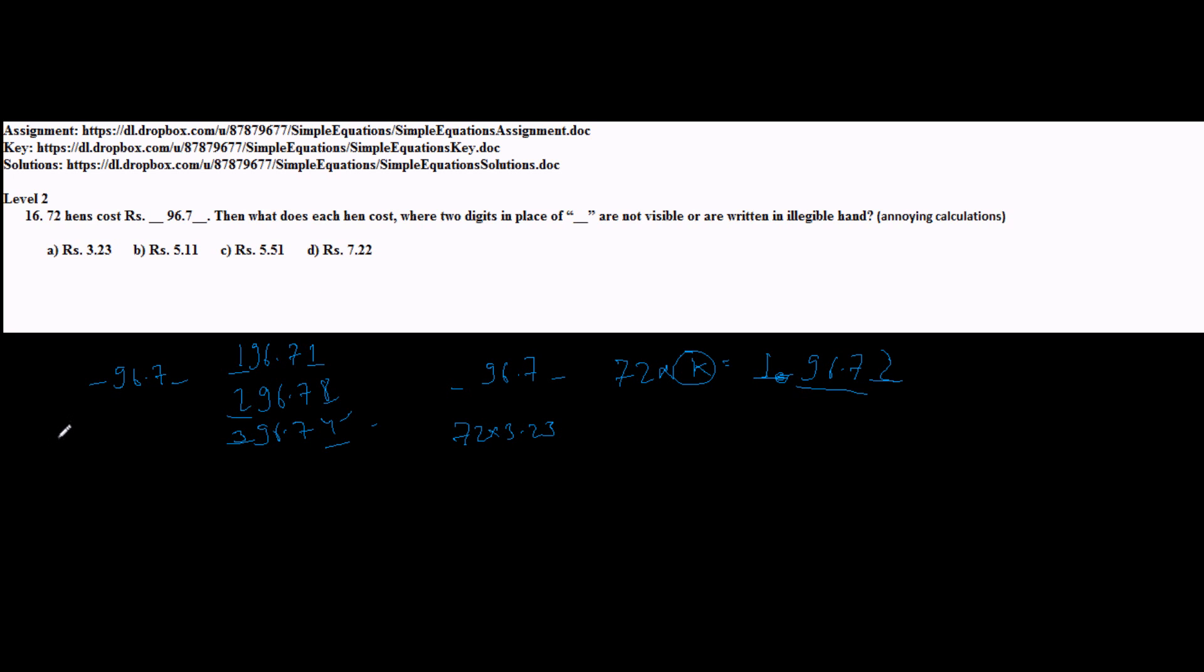We can avoid that by applying simple fundamental of mathematics. 3.23 lies between 3 and 4. So if I multiply 72 into 3 it will be 216, 72 into 4 it will be 288. So 72 into 3.23 lies between 216 and 288. Now there is no chance of having 96 at units and tens place, because we will have 17, 18, 19 till 87, but we will not have 96 between 216 and 288. So option A rejected.